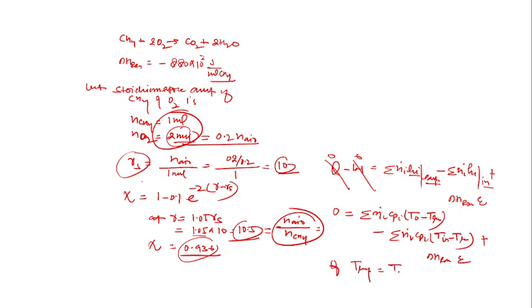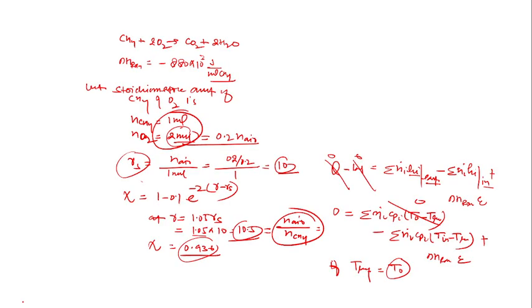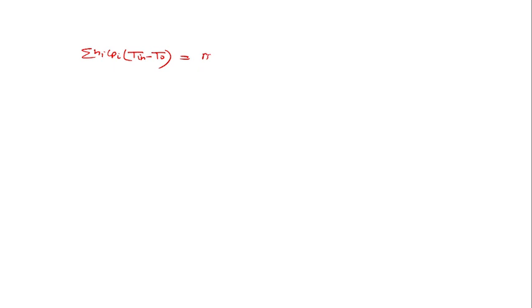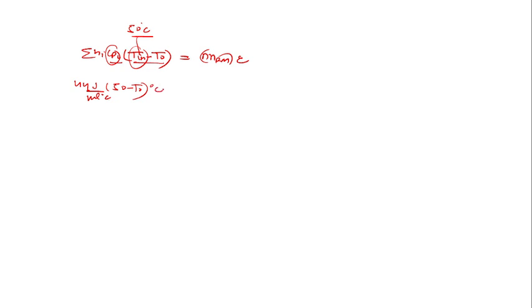If we choose the exit temperature T₀ as the reference temperature, the exit enthalpy terms cancel. The equation reduces to: Σ(ṅᵢ·Cp_i)·(T_in − T₀) + ΔH_reaction × extent of reaction = 0. Since Cp_i = 44 J/mol·°C (constant for all species) and T_in = 50°C, we can write: 44 × (50 − T₀) × Σṅᵢ + ΔH_reaction × extent = 0.